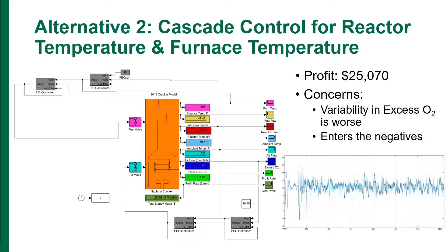The inner loop controller, PID controller 4, controlled the furnace temperature, while the outer loop controller, PID controller 5, controlled the reactor temperature.